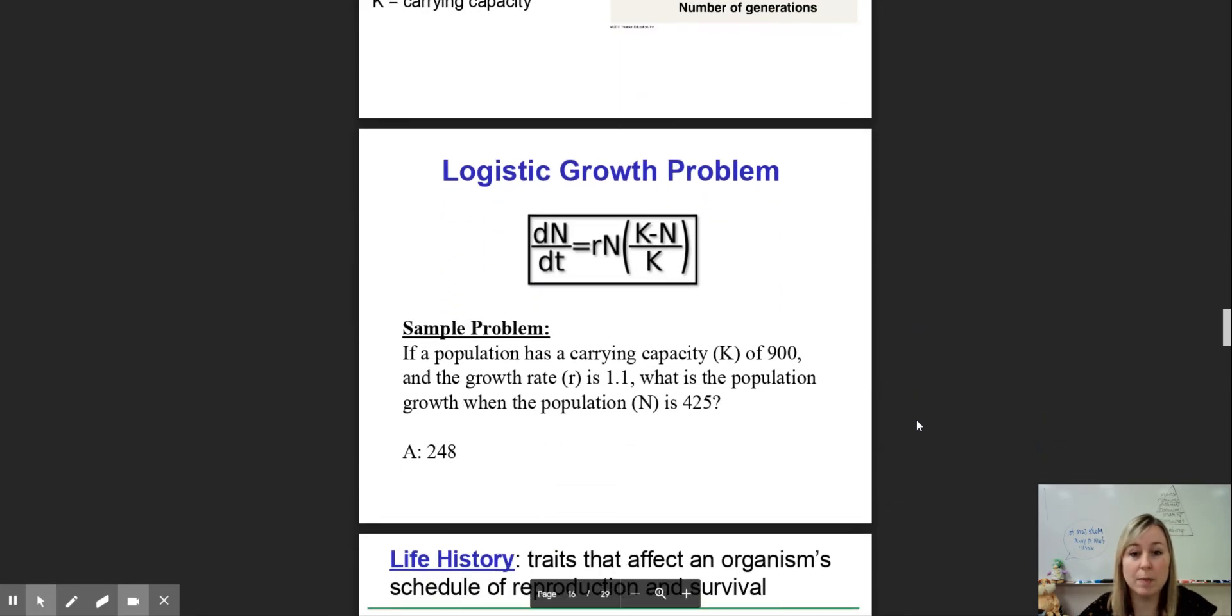Here is a sample problem for you to try. If a population has a carrying capacity of 900, growth rate is 1.1, what is the population growth when the population has 425 individuals? You should be able to plug those numbers into that equation and get 248. Just double check that you can do that so you know you're getting the math right.